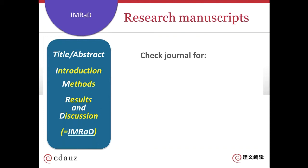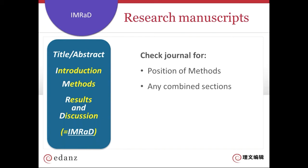The exact form of IMRAD will vary based on the journal you selected. The position of the methods may be different. Sometimes the methods are removed and put at the end of the paper. Sometimes there's only a brief version available in the manuscript itself, but the full methods are then available online. Some sections may be combined, such as the results and discussion. And there may be additional sections, such as a literature review between the introduction and methods.